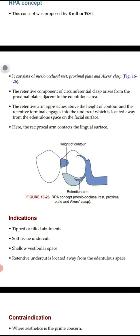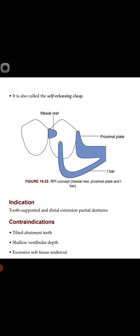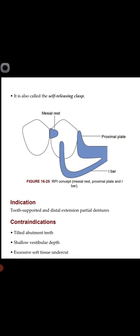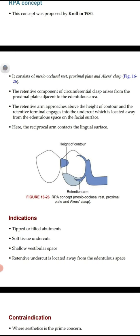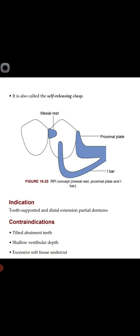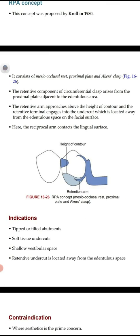The contraindications of the RPI concept are the indications of the RPA concept. The RPA concept was proposed by Kroll in 1918. It consists of the same mesial rest, proximal plate, and here an Acres clasp — meaning a circumferential clasp — not an I-bar. The retentive component of the circumferential clasp arises from the proximal plate adjacent to the edentulous area.